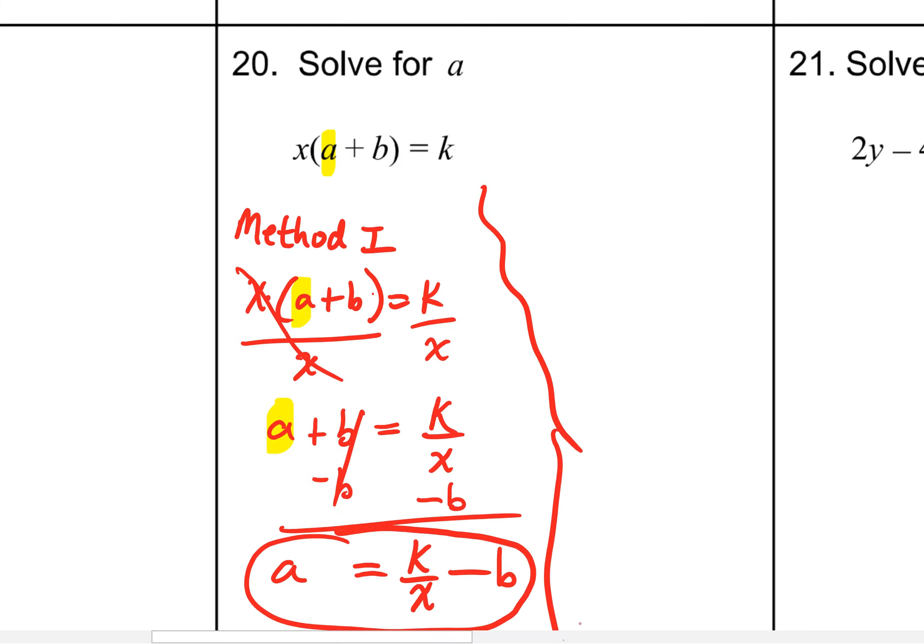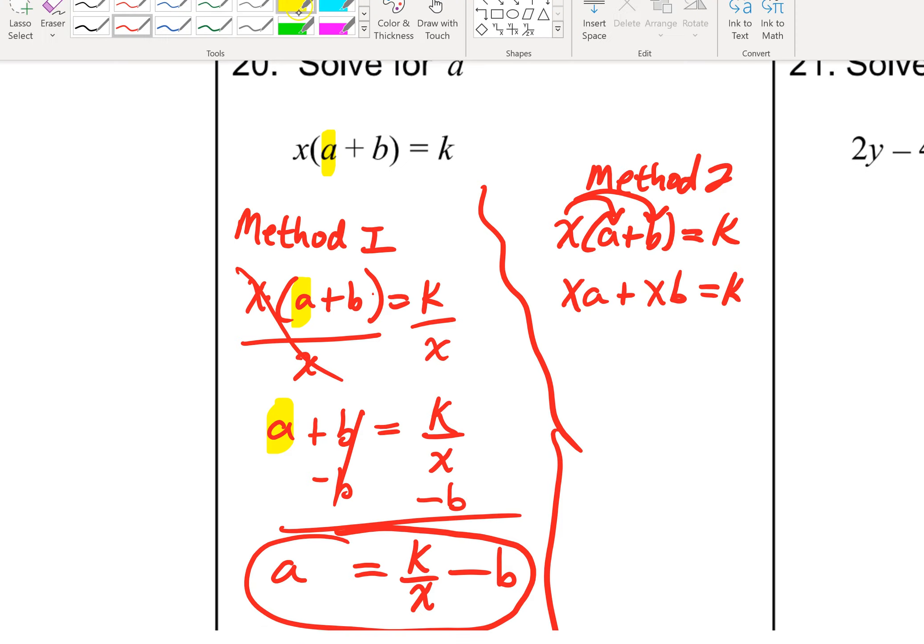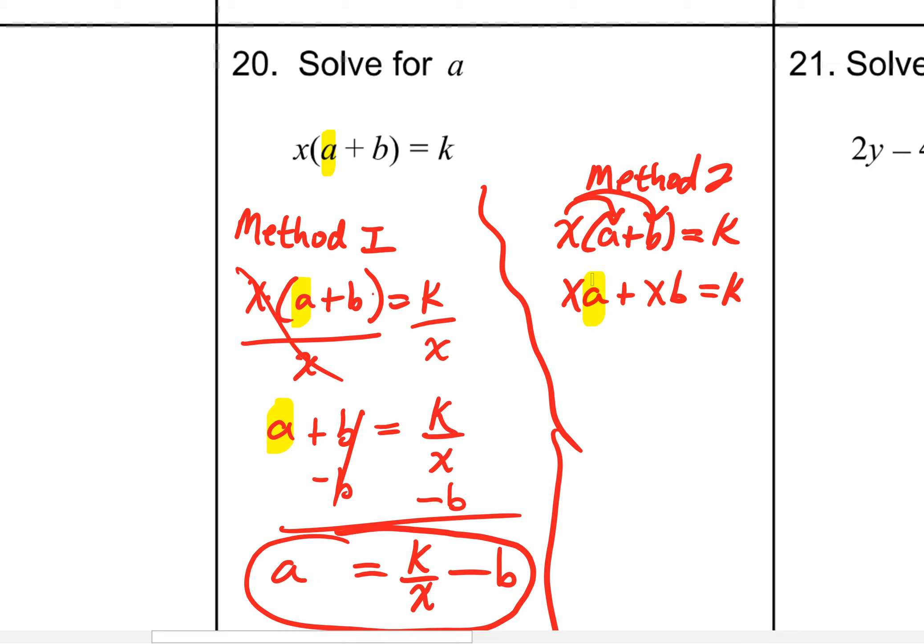Now, method 2, I'm going to do over here. Actually, a lot of kids want to do method 2, and that's okay. Many kids are going to say, look, I know from so long ago that when you see a number or a variable outside of parentheses, I want to distribute. x gets multiplied to a, and then say plus, x gets multiplied to b. And kids will say, can I not do that? Can't I just get away with that? And actually, you can. You certainly can. That's definitely allowed.